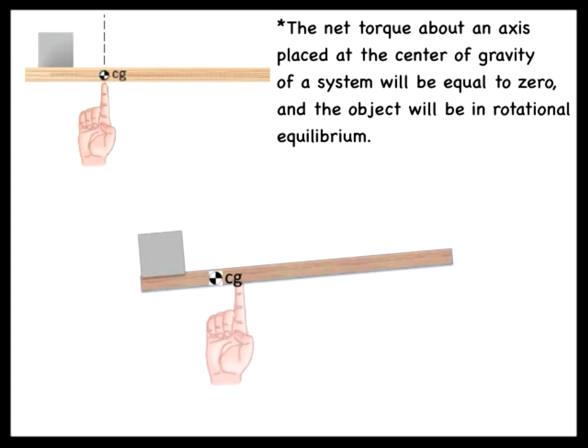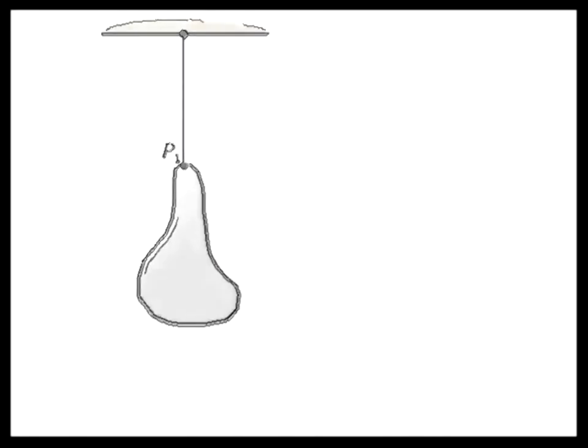What if an object has an irregular shape and a non-uniform weight distribution? We can locate its center of gravity using the following procedure. First, suspend the object with a string, for example, from some arbitrary point P1. The object will hang in equilibrium, and its center of gravity must be located somewhere beneath the string along the line below the point of suspension. We draw a dashed line on the object beneath the string.